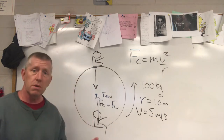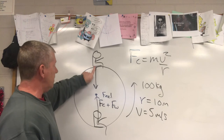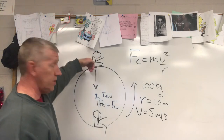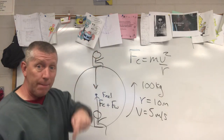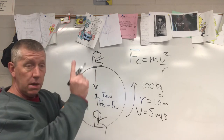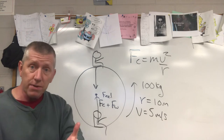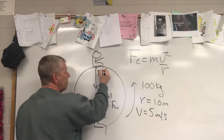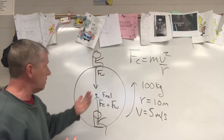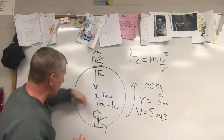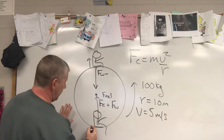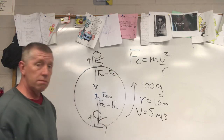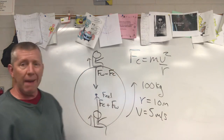At the top, we have FC pulling you toward the center of the circle, and we have the seat pushing up on your body. However, centripetal force is in the opposite direction of the seat pushing up, so we subtract those vectors. At the top, the force you feel equals FW minus FC — your weight minus the centripetal force — which means you feel lighter.